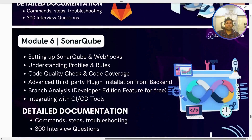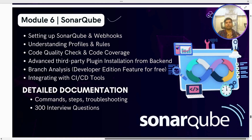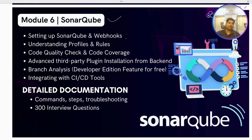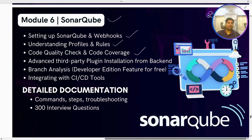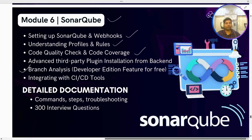The SonarQube module goes beyond just code quality checks and code coverage. There are two versions — free and paid — and I'll explain the main differences and how you can get paid features in the free version. We'll set up SonarQube and SonarQube webhooks for quality gate checks, understand quality profiles and rules, and perform code quality and code coverage checks on both a Java-based project and a Node.js-based project. We'll also cover branch analysis and how to get it for free, and integration with any CI/CD tool.